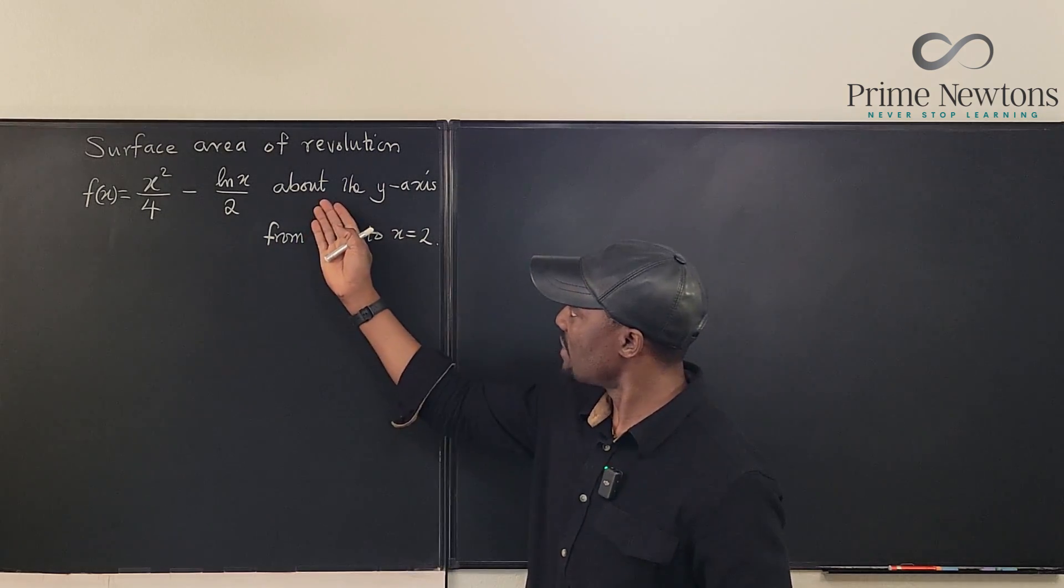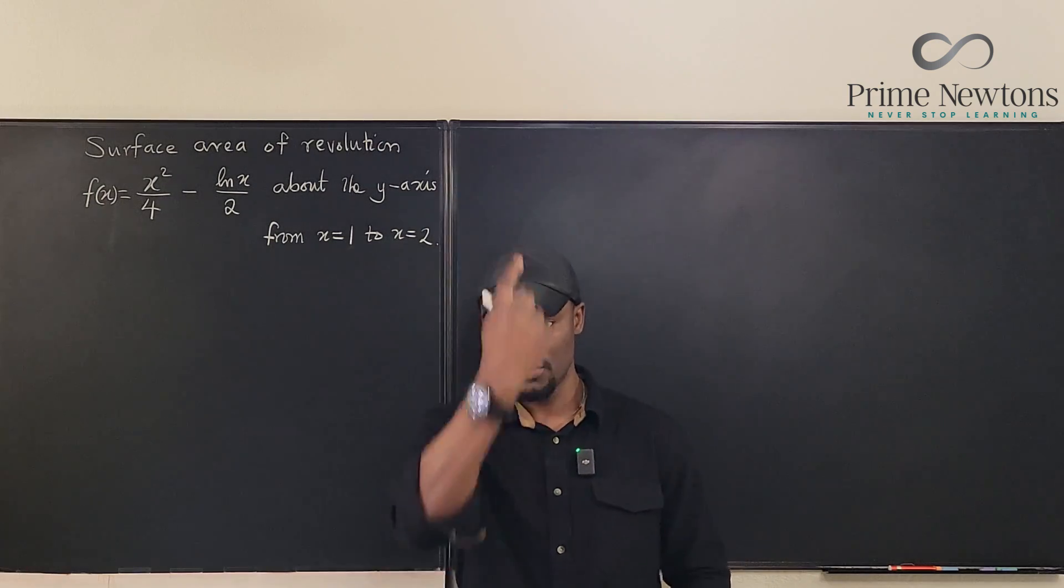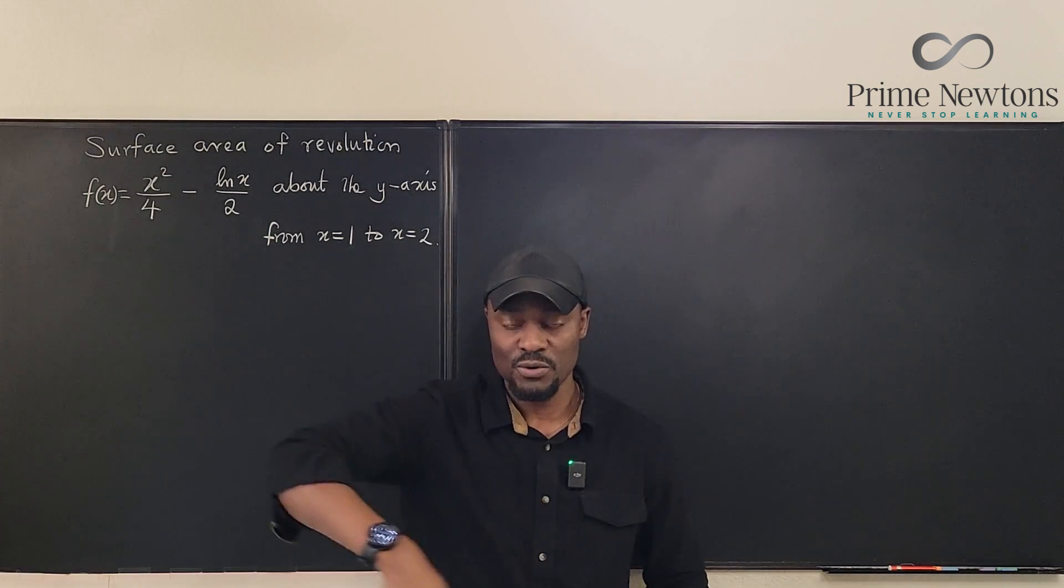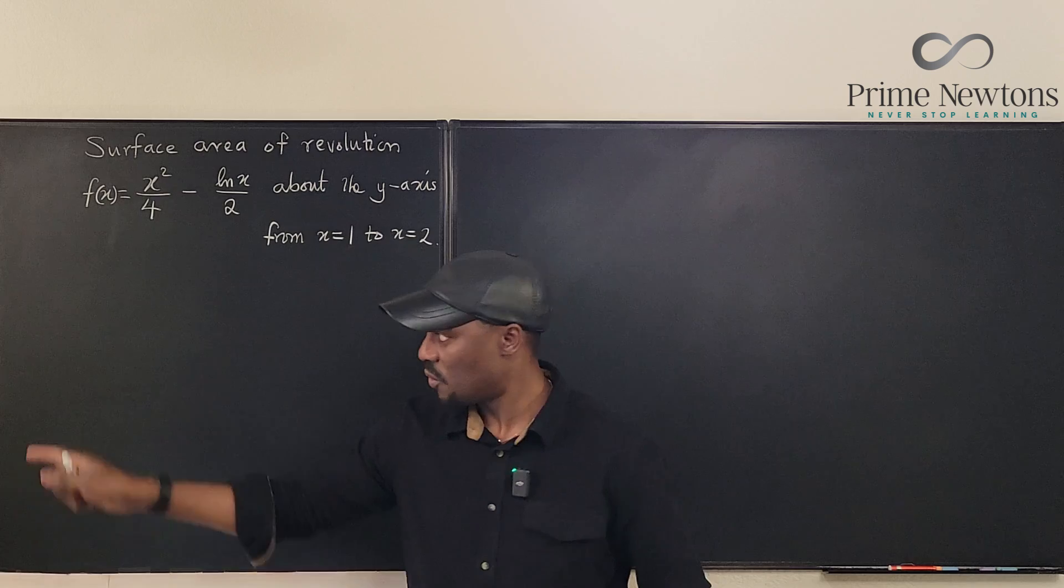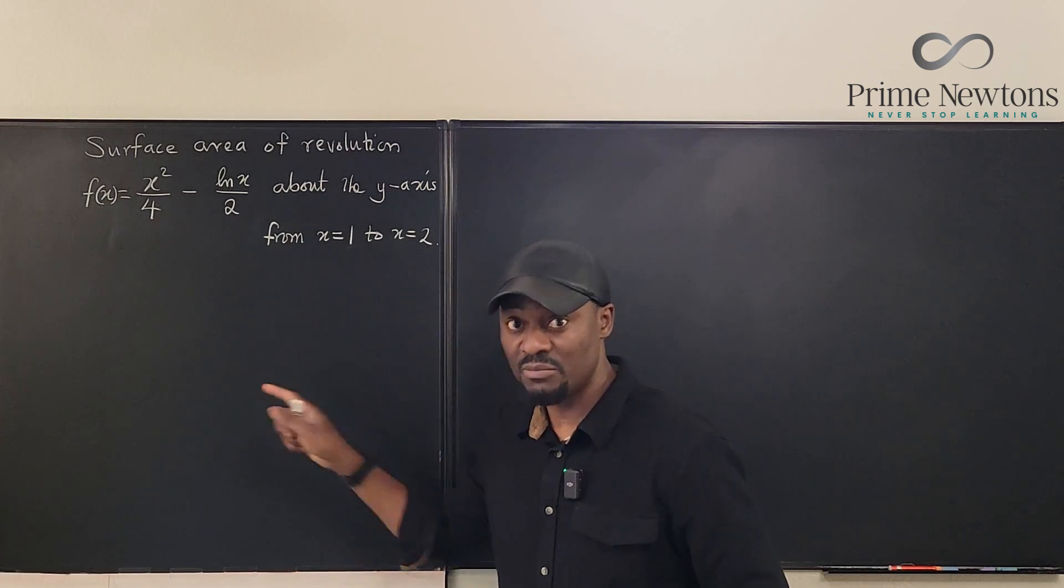And your radius depends on in what direction the function is rotated. The problem we have here says we're rotating about the y-axis. So the y-axis is vertical and you're running round circles horizontally. The horizontal line is the x-axis. Therefore, your x must be the radius.